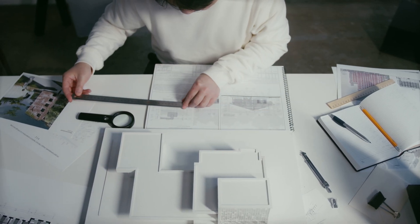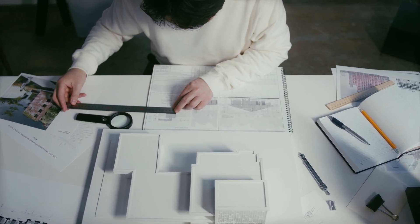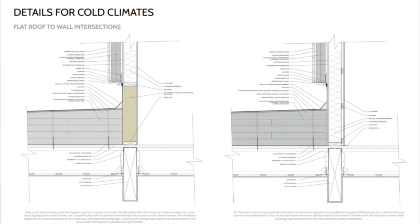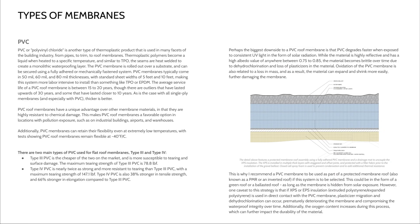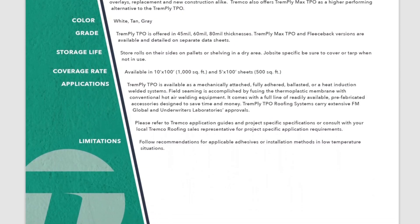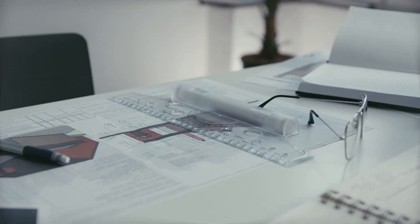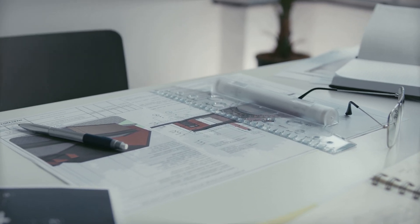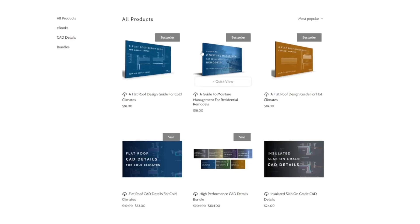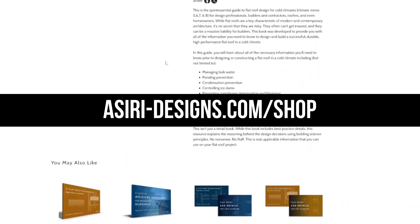If you're designing or building a flat roof and don't know where to start, I've laid it all out in my climate-specific design guides to flat roofs, covering topics like assembly design to maximize long-term durability and performance, membrane selection and specifications, insulation, cover boards, and so much more. I've found that manufacturer's instructions and product data sheets can only get you so far. You can find these guides and details at siri-designs.com/shop — links will be in the description below. Now back to the video.